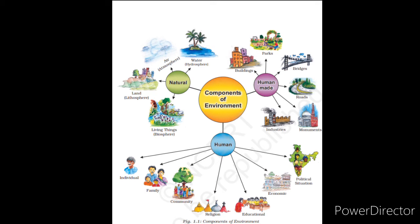So there is a difference between human-made environment and human environment. Human-made environment contains all the components which are made by human beings, while human environment means all those types of things which surround humans and make up their environment. So these three components are of environment.